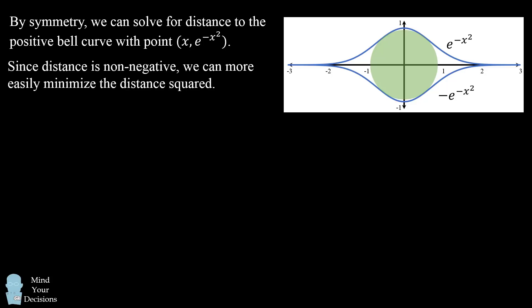Since distance is a non-negative value, we can more easily minimize the distance squared. This will be the distance squared from the origin to the positive bell curve, which ends up being the same function without that messy square root, which will complicate our derivative and further calculations. This is a standard trick whenever we want to minimize the distance. So now, let's tackle this problem. We want the minimum value of x squared plus e to the power of negative 2x squared.